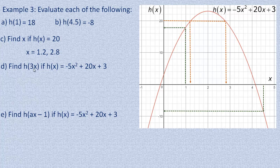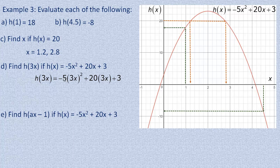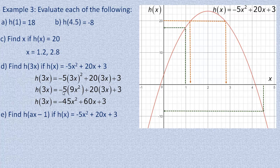Parts D and E don't use specific numbers — we substitute expressions. For h of 3x, we put 3x in place of x in the function. Remember order of operations: square before multiplying by negative 5. So 3x squared is 9x squared — a common mistake is squaring the x but not the 3; the 9 comes from 3 squared. Then negative 5 times 9x squared is negative 45x squared, and 20 times 3x is 60x. So h of 3x equals negative 45x squared plus 60x plus 3.